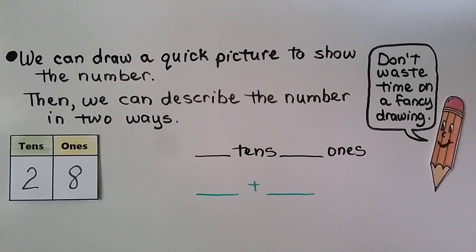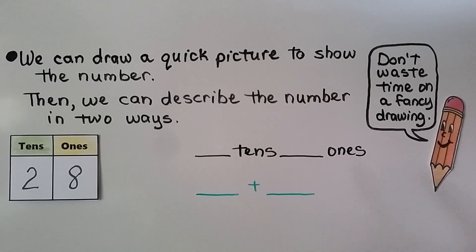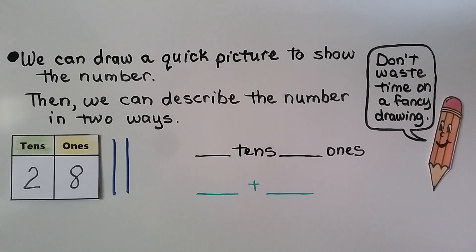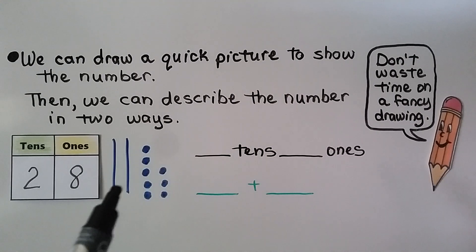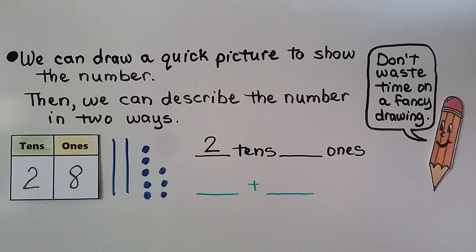We can draw a quick picture to show a number — we don't want to waste time on a fancy drawing, just a quick picture. Our number is 28. We can use lines to show the tens, drawing a long line for each ten, and dots for the ones. We draw eight dots for eight ones. We have ten, twenty, and eight — twenty-eight.